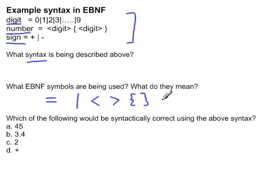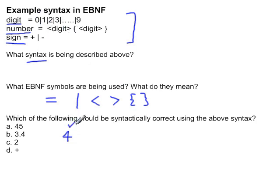We are now going to look at which of these four numbers and symbols is syntactically correct based on what we have defined. So 45: the 4 is a digit, which can be part of a number. That is followed by a 5, which is also a digit. Therefore 45 is defined as a number, which is correct.